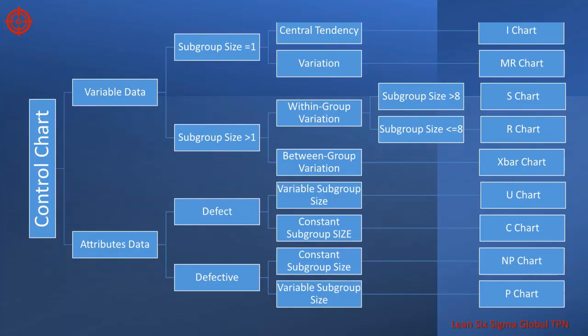There are four control charts available for attribute data: the u chart, c chart, np chart, and p chart. It's important that we choose the right control chart for our data and for the quality characteristic of interest.